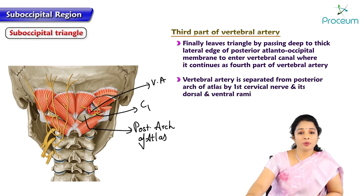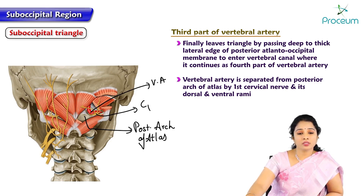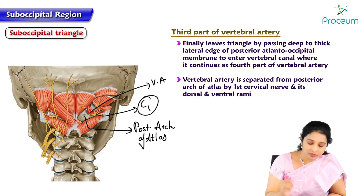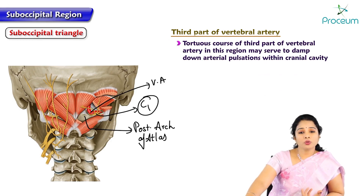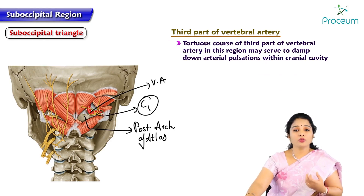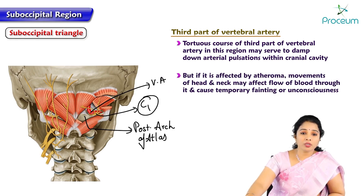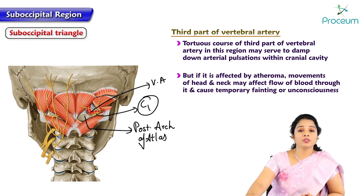The vertebral artery is separated from the posterior arch of the atlas by C1 nerve, that is the first cervical nerve or suboccipital nerve, and its dorsal and ventral ramus. We can see the arch is separated from the artery by C1 nerve. The tortuous course of the third part of the vertebral artery may serve to damp down arterial pulsations within the cranial cavity, but it is affected by atheroma — that is plaque forming in the artery — and by movements of the head and neck, which may affect blood flow and cause temporary fainting or unconsciousness.